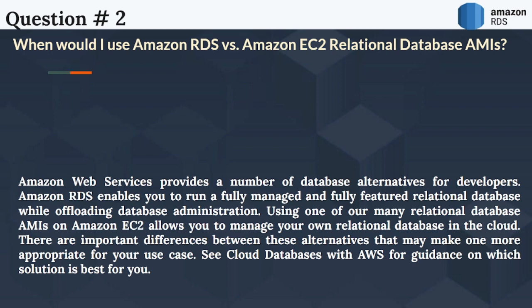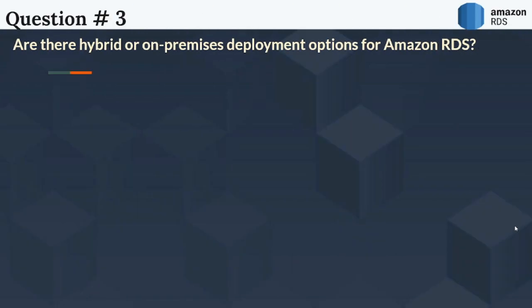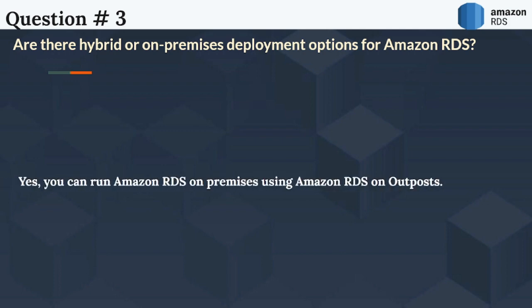The next question is: Are there hybrid or on-premises deployment options for Amazon RDS? Yes. You can run Amazon RDS on-premises using Amazon RDS on Outposts.